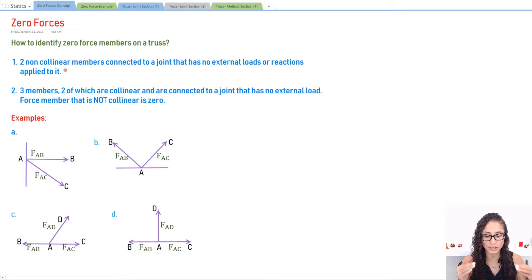So collinear just means that the forces that are acting are on the same line of action, but non-collinear means they're not on the same line of action. So this is what it means.